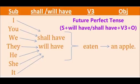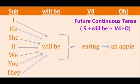The next tense is future continuous tense. The structure is subject plus will be plus V4 plus object. Here we use the helping verb 'will be', which indicates actions happening in the future at a certain point in time. For example: I will be eating an apple, she will be eating an apple by this time, you will be eating an apple, they will be eating an apple. It refers to an action that will be happening in the future — we assume it will be occurring at that time.